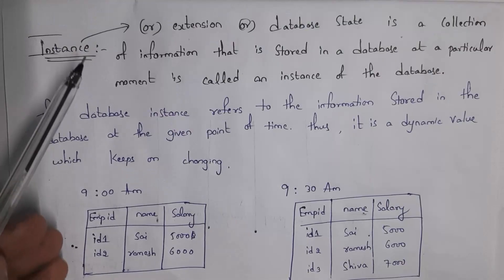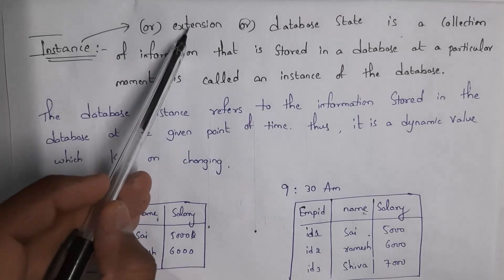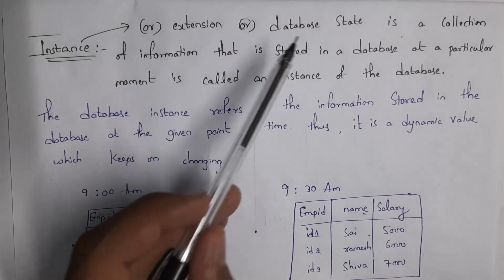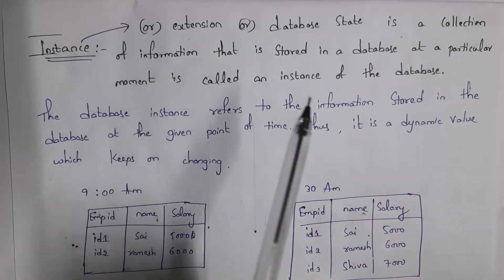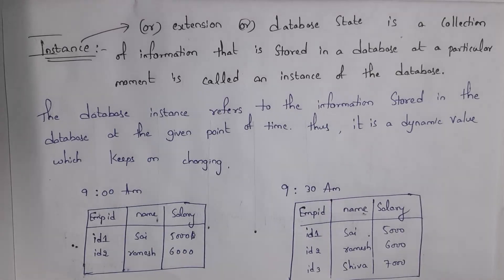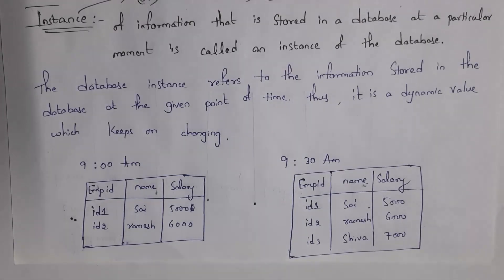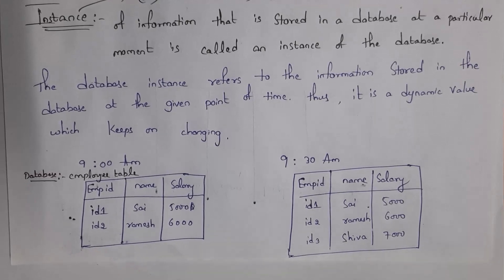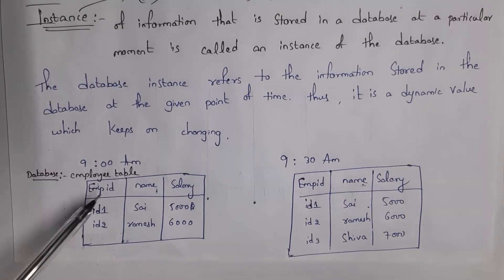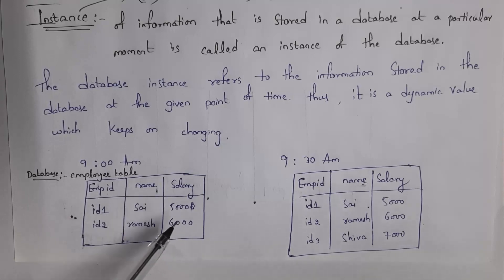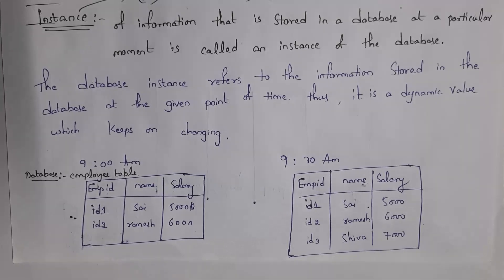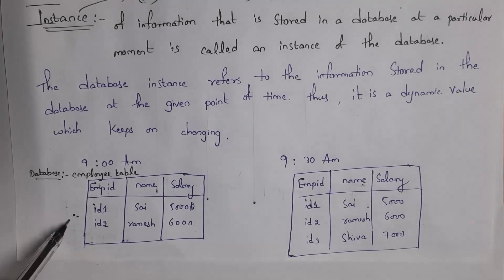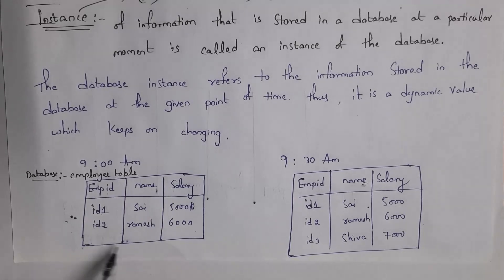Next, I will explain what is instance. We also call instance as extension, or we also call it as database state. Instance is a collection of information stored in a database at a particular moment — this is called an instance of the database. For example, I open my database, inside which there is an employee table containing employee ID 1, name Sai, salary 5000, and similarly ID 2, name Ramesh, salary 6000. Whenever I open my database at a particular point in time, whatever information is present inside is called instance.